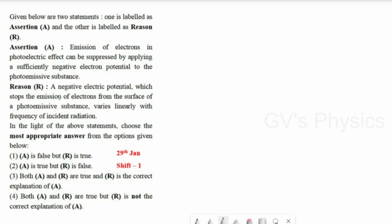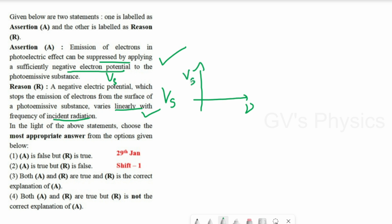Next is a theory assertion-reason question. Assertion: emission of electrons in the photoelectric effect can be suppressed by applying a sufficiently negative electric potential to the photoemissive substance. This is correct — the negative potential is the stopping potential. Reason: the stopping potential varies linearly with the frequency of incident radiation. This is also correct, as the graph of stopping potential versus frequency is linear. However, the reason is correct but is not the correct explanation for the assertion, so option 4 is the right answer.